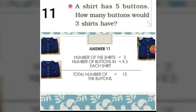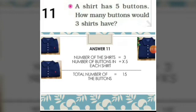A shirt has 5 buttons. How many buttons would 3 shirts have? Can you see the 3 shirts here? Each shirt has 5 buttons. So the number of shirts is 3 and the number of buttons in each shirt is 5. To find the total number of buttons, we multiply 3 into 5, which is equal to 15. Let us recheck: first shirt has 5 buttons, second shirt 5, third shirt 5. So 5 plus 5 plus 5 equals 15 — that is 3 times 5 is 15.